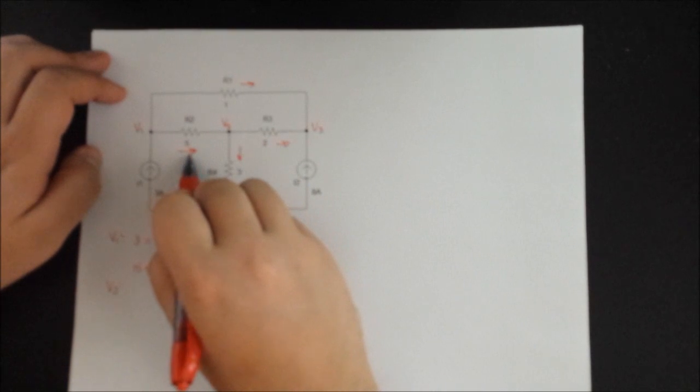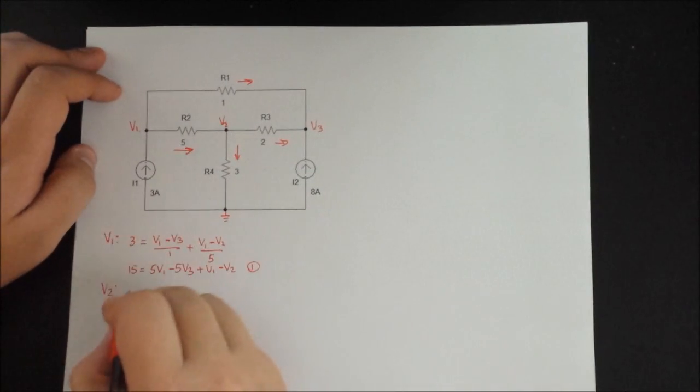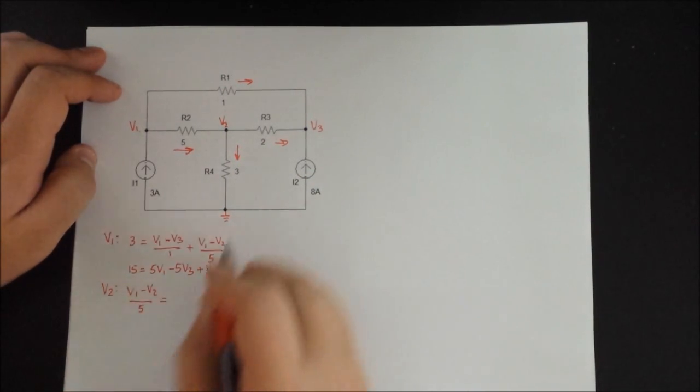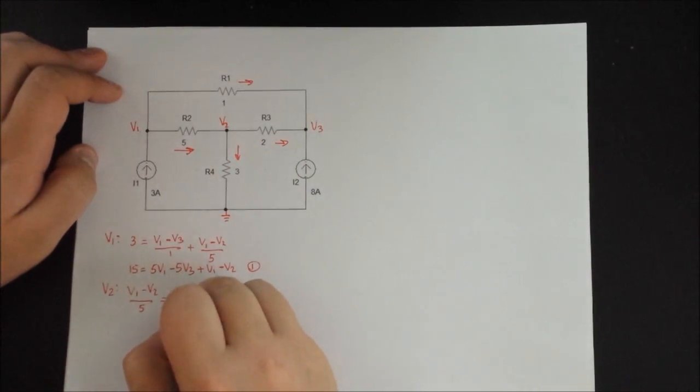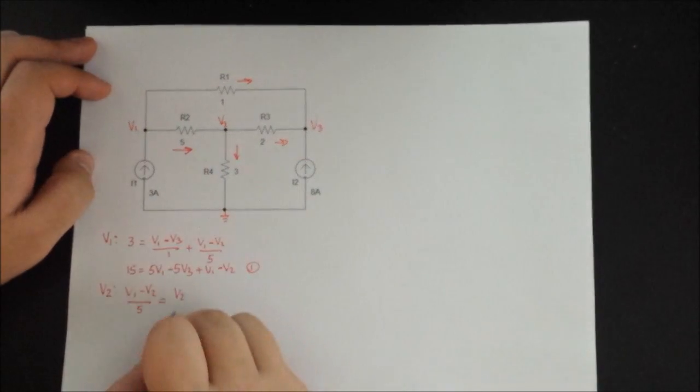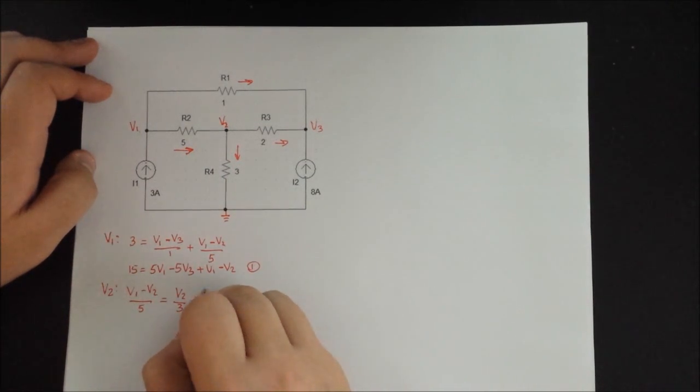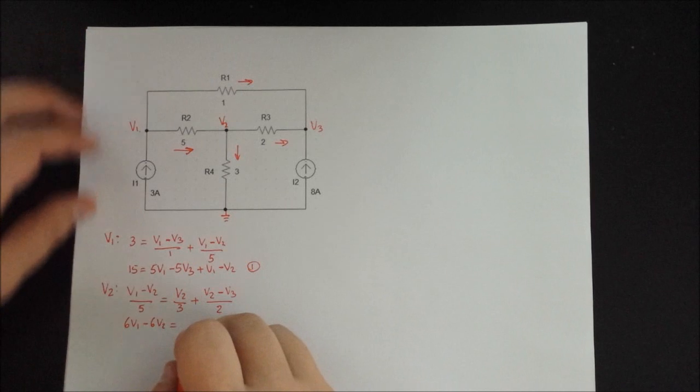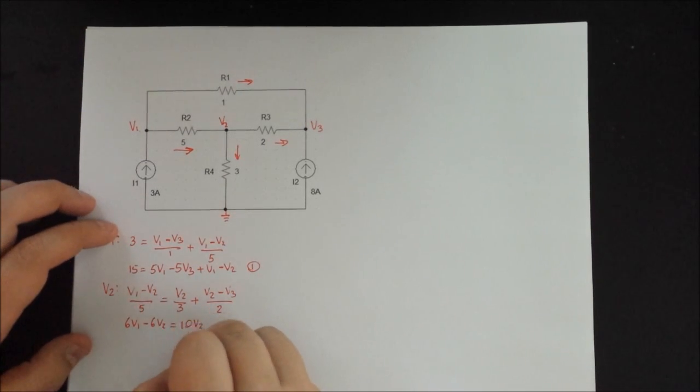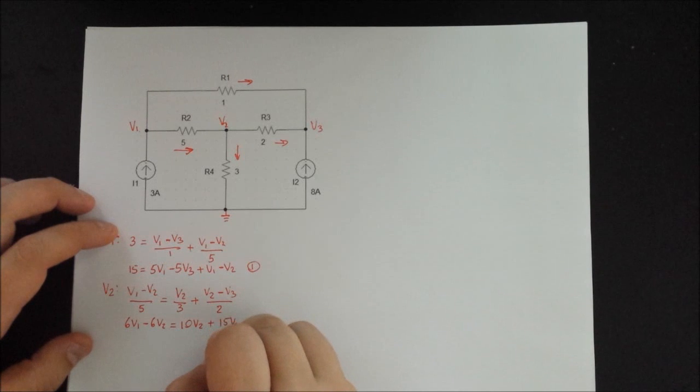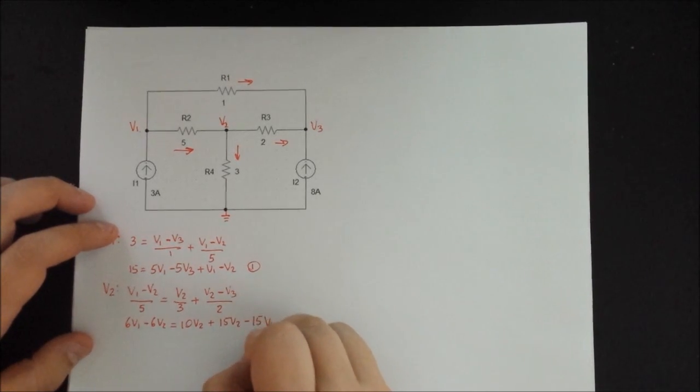For V2 we have one current that's coming in and two of them that are coming out. So the one that's coming in is V1 minus V2 divided by the resistance. And that is equal to V2, in this case it's minus 0 since it's the ground, so we can just write V2 divided by 3, plus V2 minus V3 divided by 2. And we can multiply everything by 30, so that's 6V1 minus 6V2 equal to 10V2 plus 15V2 minus 15V3.